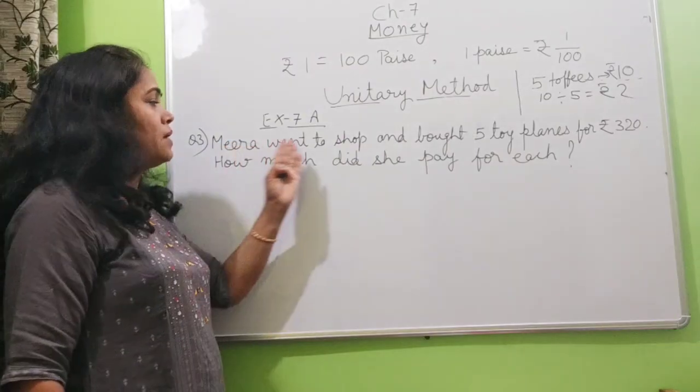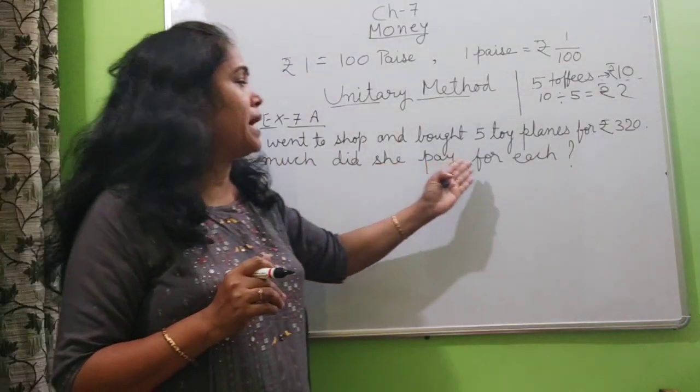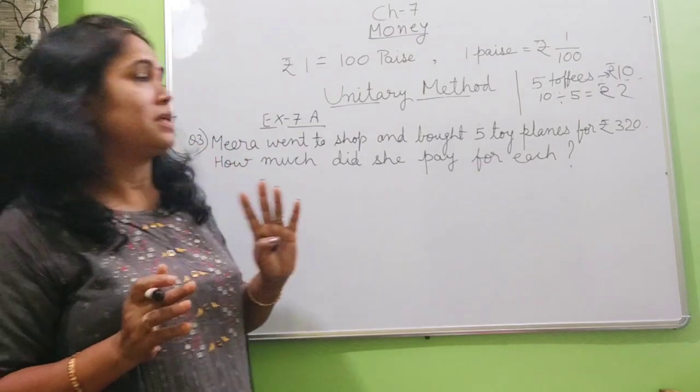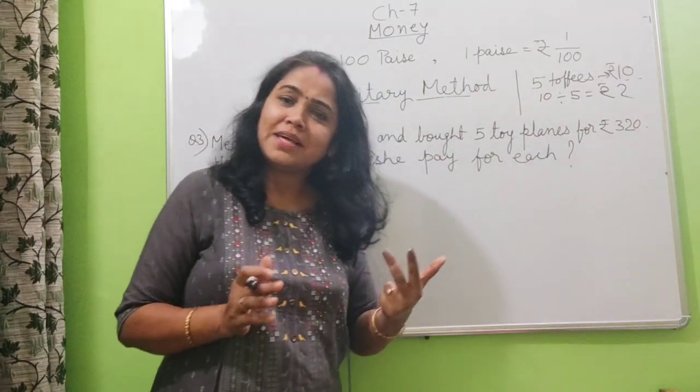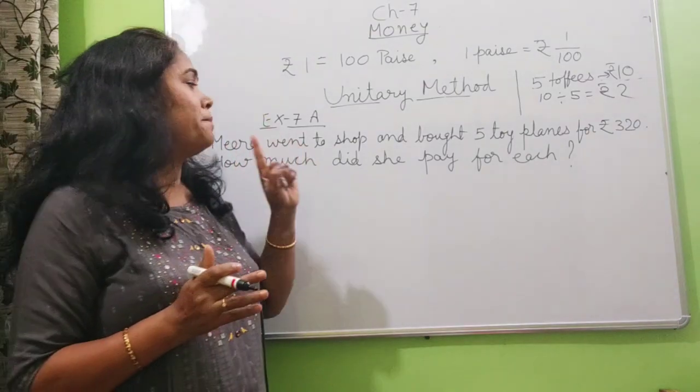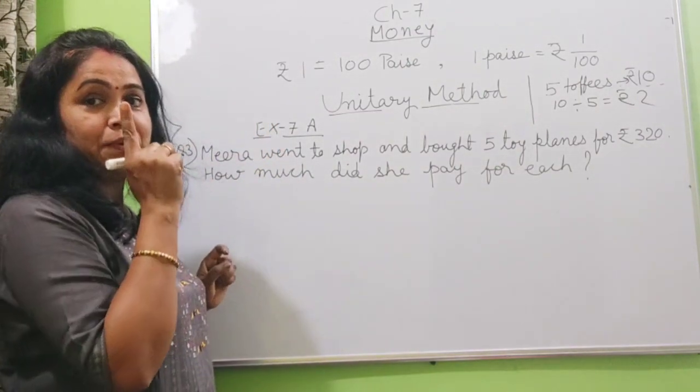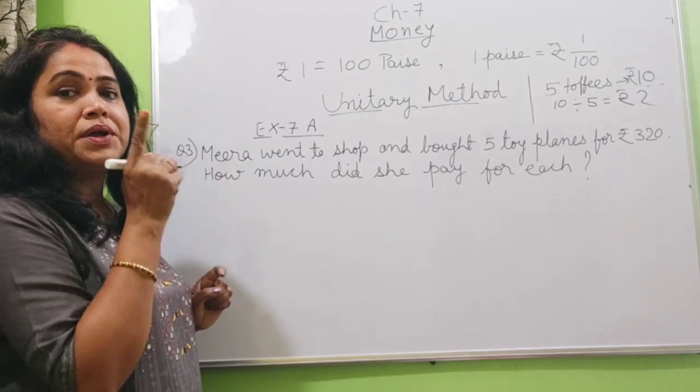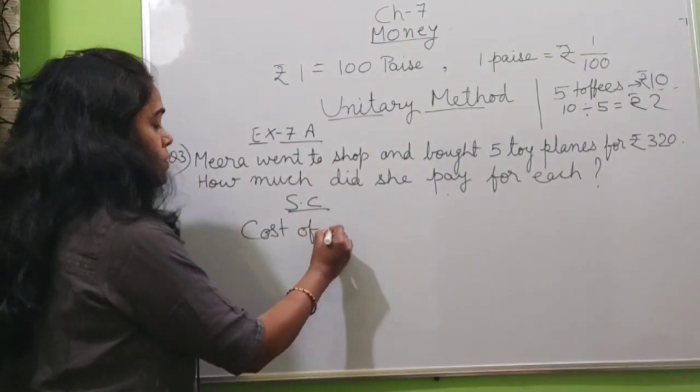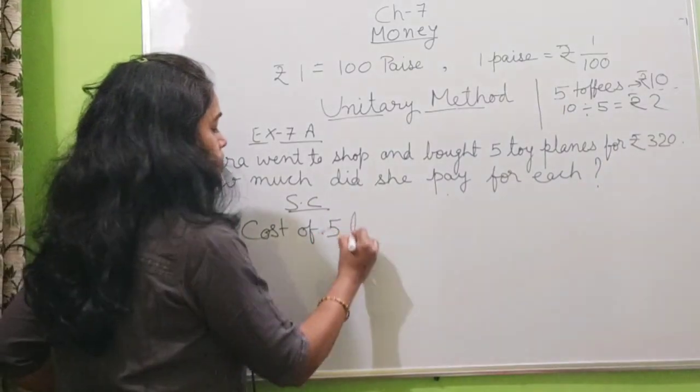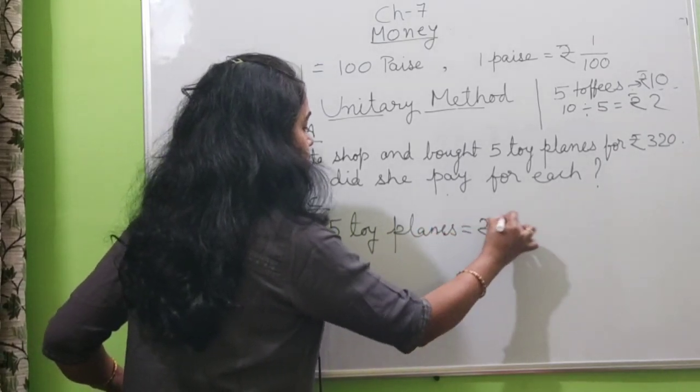So I have a question. Meera went to a shop and bought 5 toy planes for rupees 320. How much did she pay for each? Obviously whenever such type of questions come, you must think that 5 toy planes for rupees 320, then obviously 1 toy plane will be less price. So for less price you have to divide. In statement column, you will write cost of 5 toy planes is equal to rupees 320.